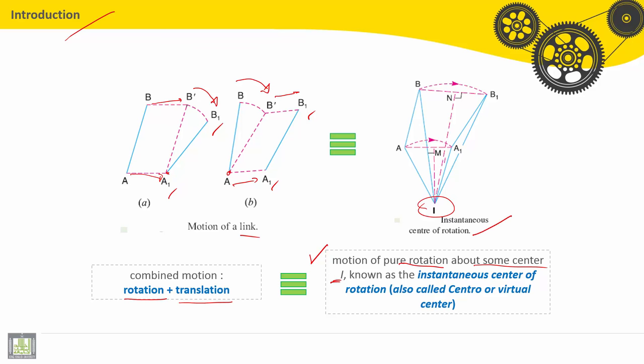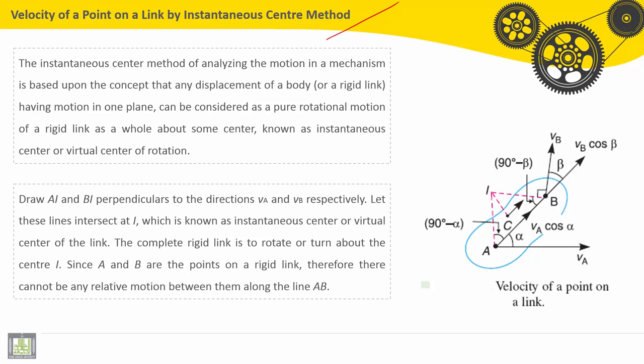I is known as an instantaneous center of rotation, also called central or virtual center. Velocity of a point on a link by instantaneous center method.